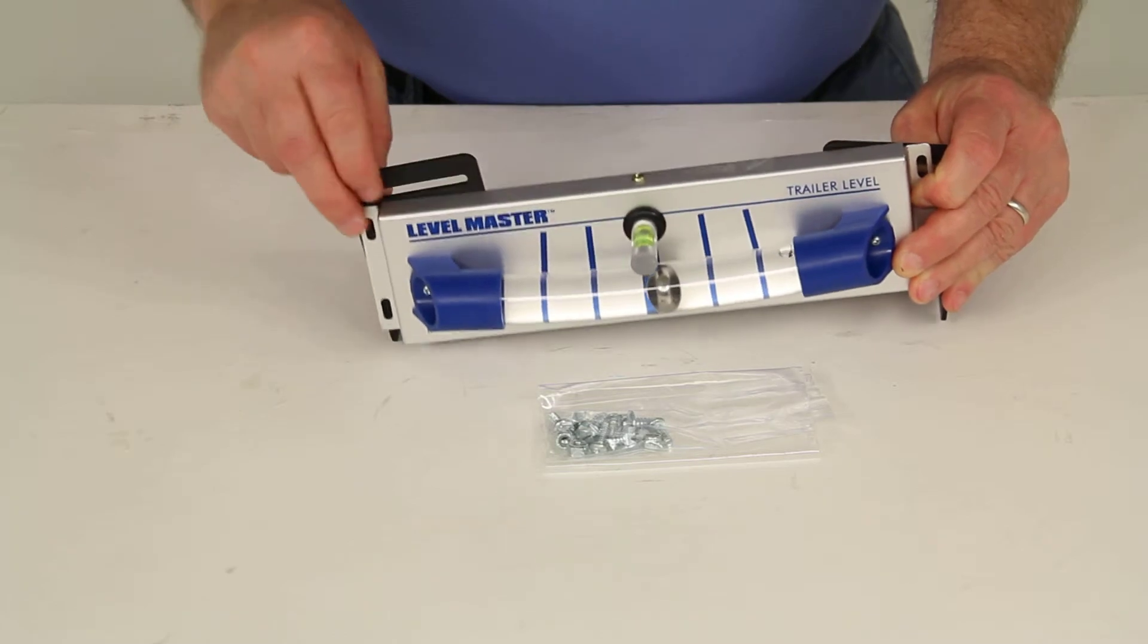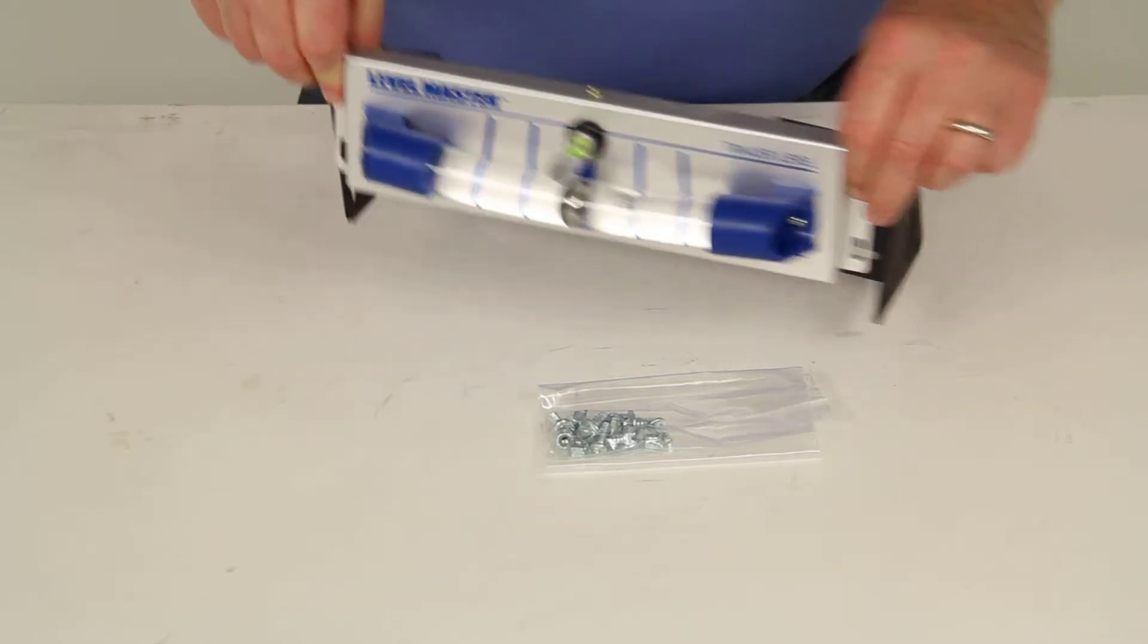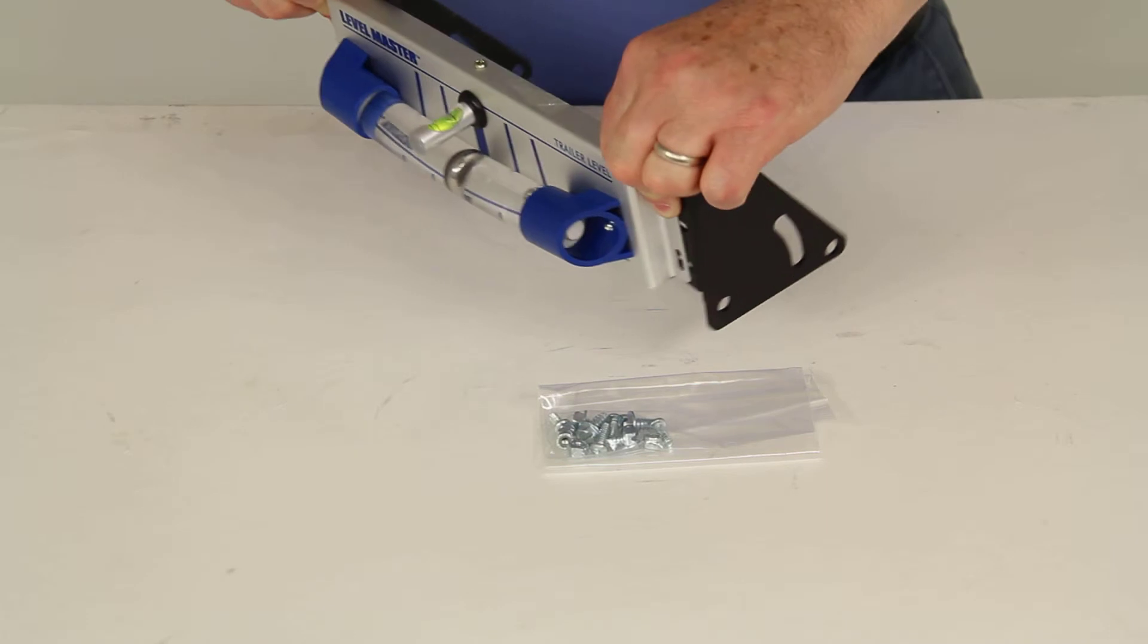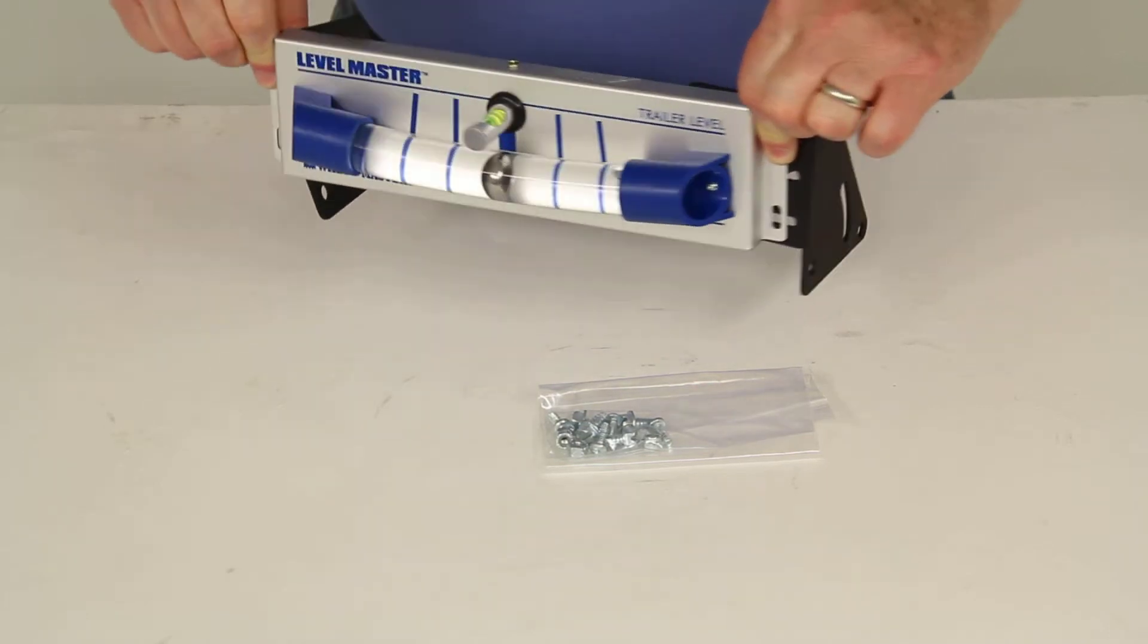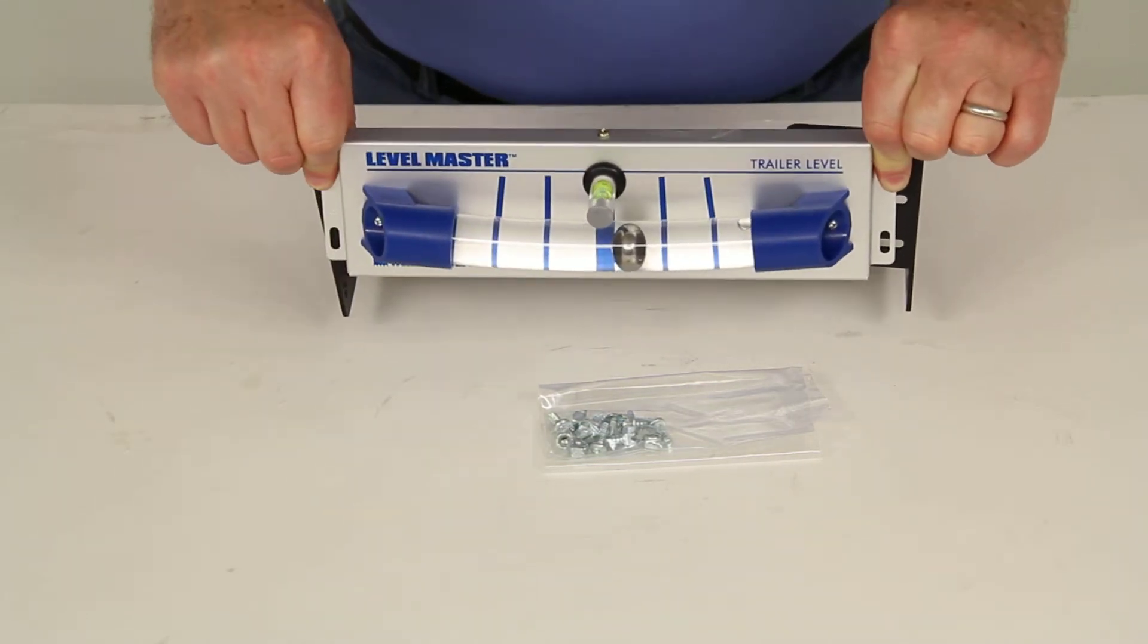So basically they would be mounted like this, and then when you mount it to your pin box, it would allow it to rotate to keep it level front to rear and side to side.